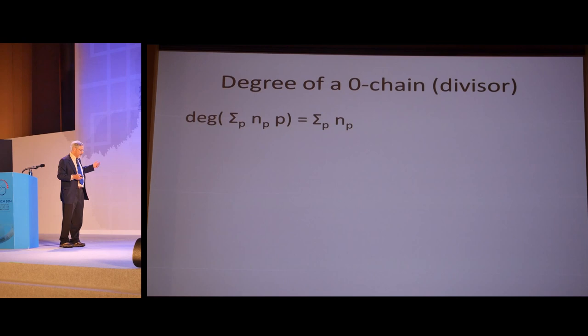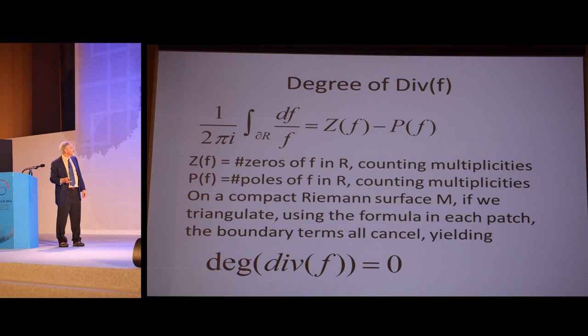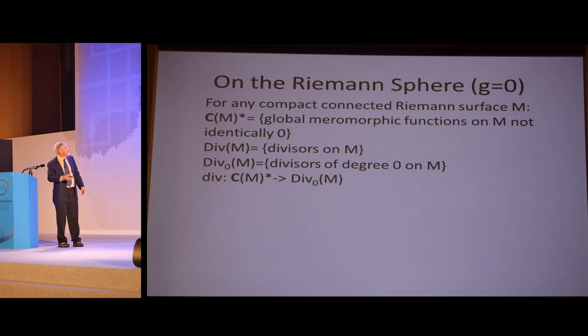The degree is just you add up the coefficients. You take a double pole as minus two plus a triple zero, et cetera. You get a number. The first theorem about these is that on a global meromorphic function on a compact Riemann surface, this degree is always zero. Counting zeros and poles, you have the same number of zeros and poles. This is easy to see. We all learn in complex analysis, if you have a region R whose boundary doesn't go through a zero pole, if you integrate one over 2πi df over f around this, you get the number of zeros minus the number of poles. If you just triangulate your surface, you'll see that each edge occurs twice with opposite direction. If you apply this, the left hand side will add up to zero.